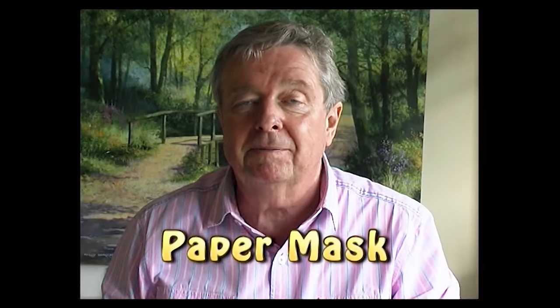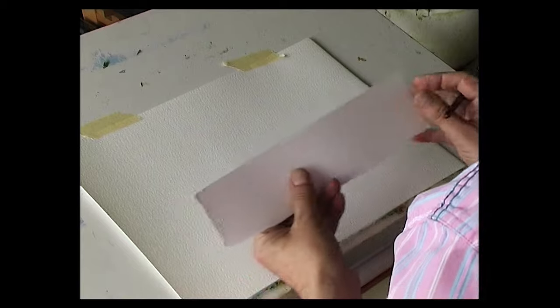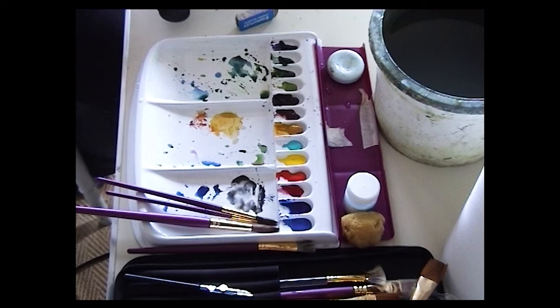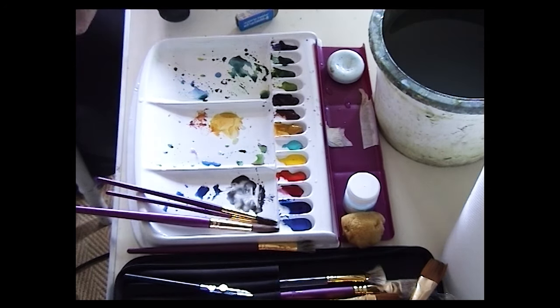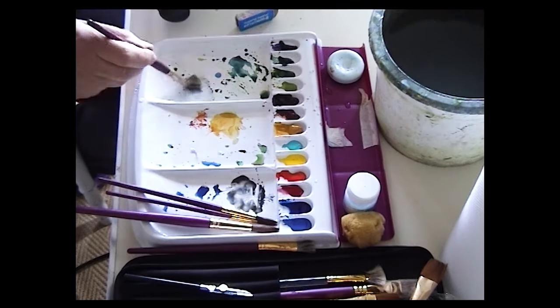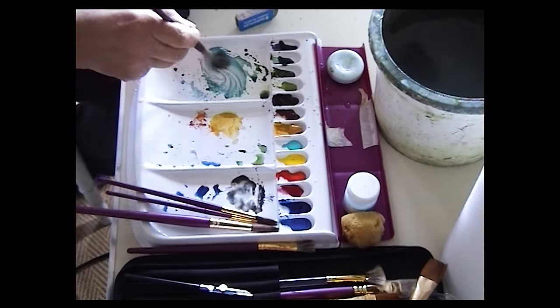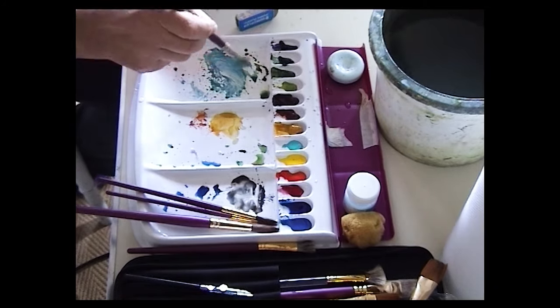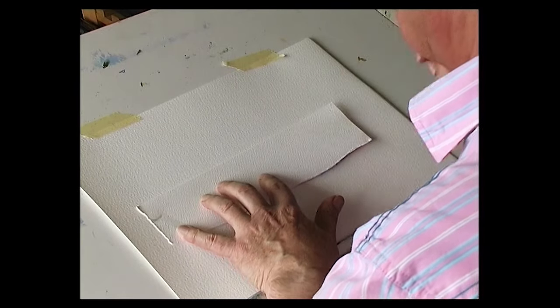This is a technique I've been using for quite a few years now, using a piece of paper as a mask. I'm going to paint in some hedgerows off into the distance. We use the foliage brush, squeeze the water out so it's not too wet, with a bluey-green—a touch of cobalt blue and country olive. Use the piece of paper as a mask.